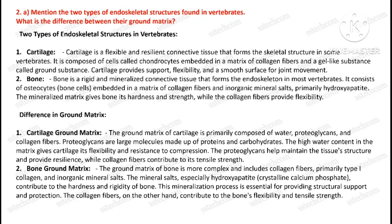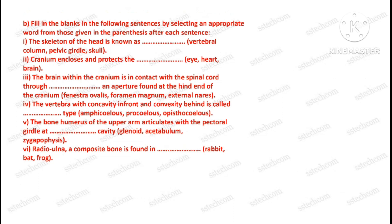Question number two, first part: mention the two types of endoskeletal structures found in vertebrates and what is the difference between their ground matrix. The second part is: fill in the blanks in the following sentences by selecting an appropriate word from those given in parenthesis after each sentence.